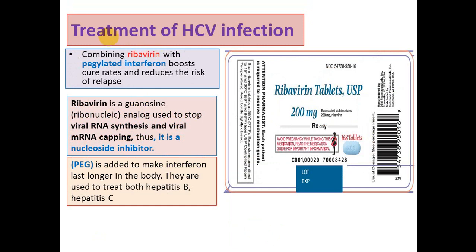The therapy protocol for hepatitis C virus is a combination of two drugs: ribavirin with pegylated interferon. Ribavirin is a guanosine ribonucleic acid analog used to stop viral RNA synthesis and viral mRNA capping. Its mechanism is as a nucleoside inhibitor.